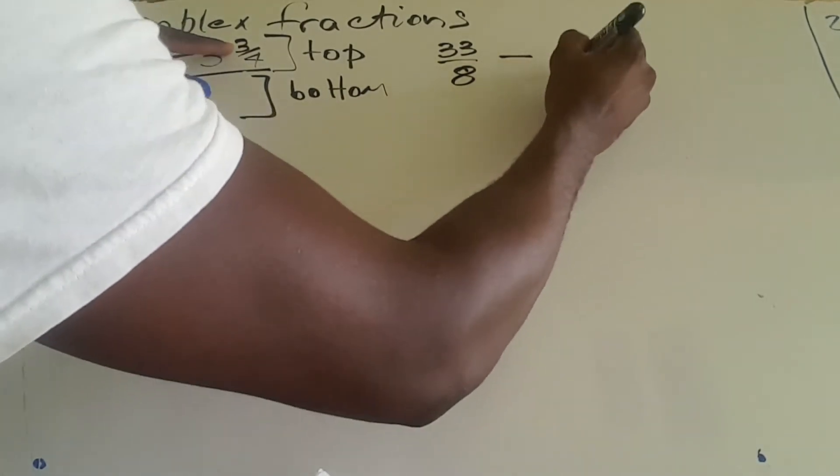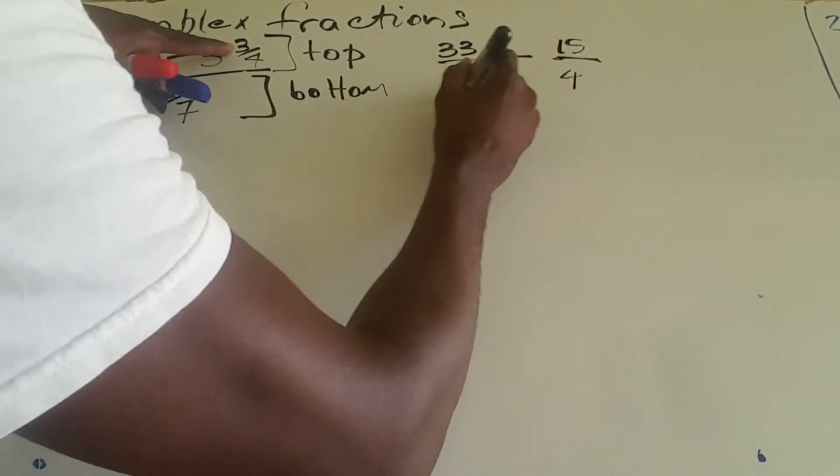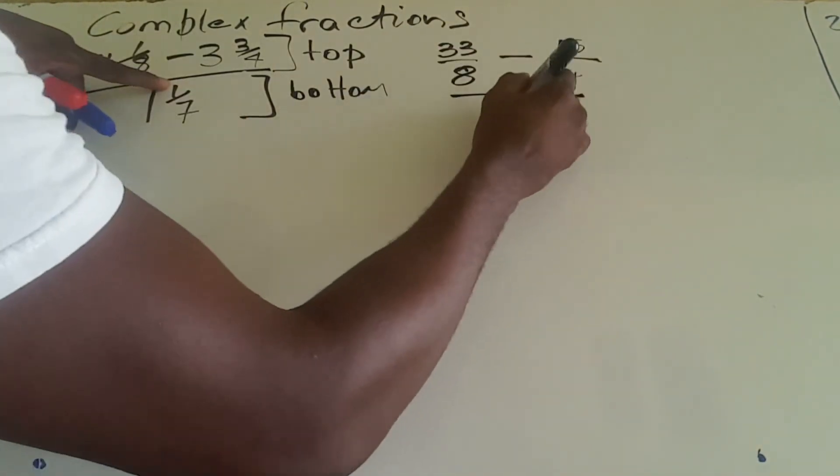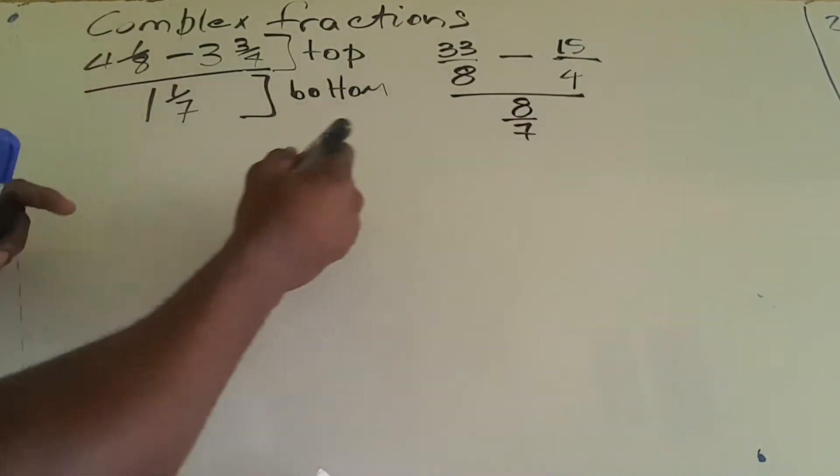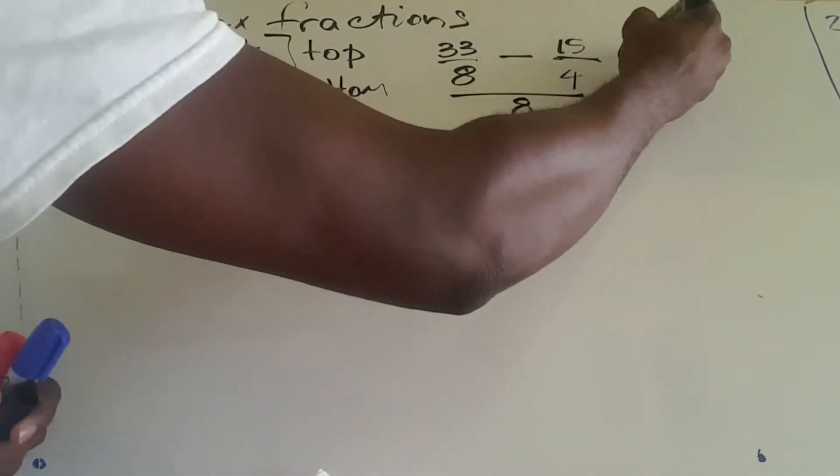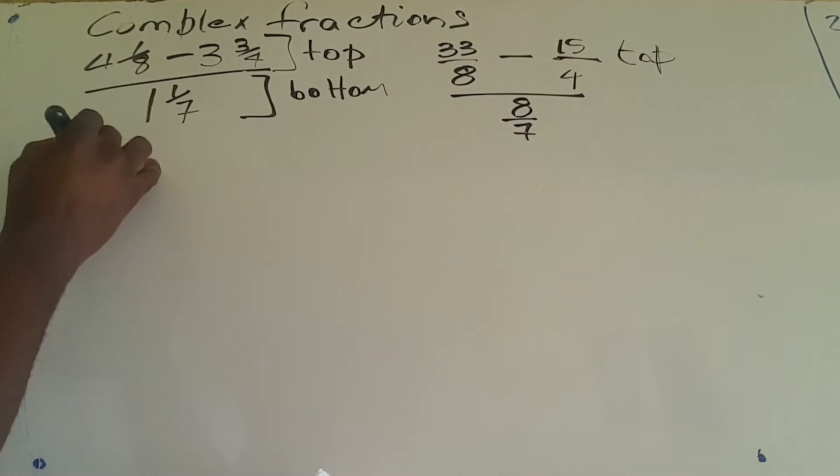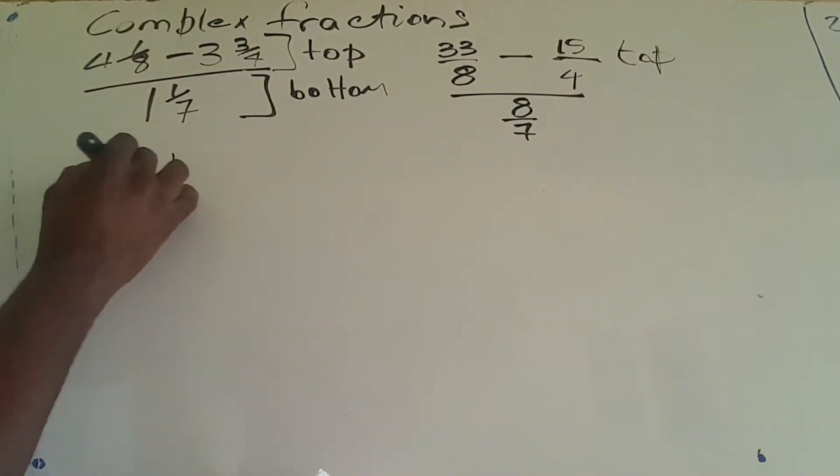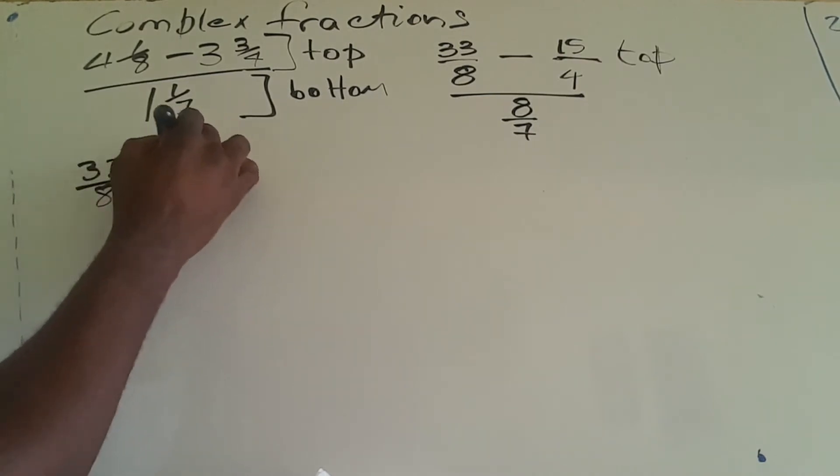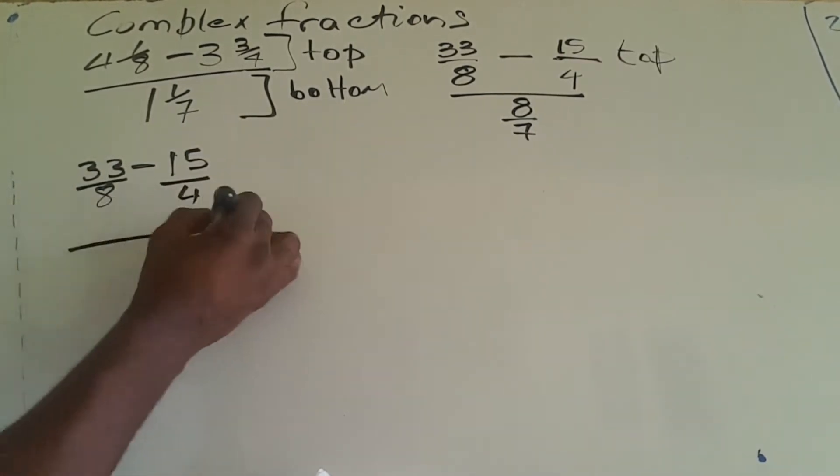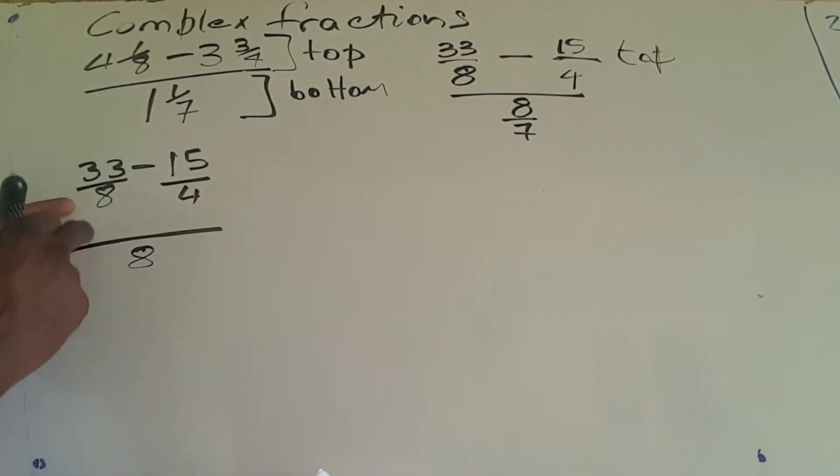I'm going to work with the top part now. So what I have is 33 over 8 minus 15 over 4. The LCM for this is 8. 8 into itself one time, 1 times 33 is 33.